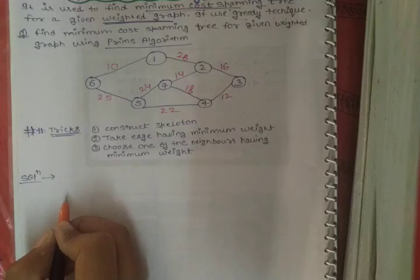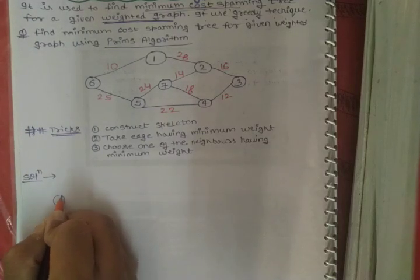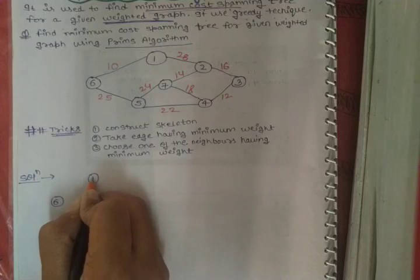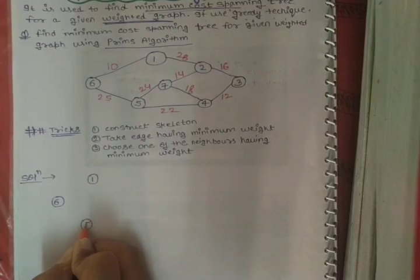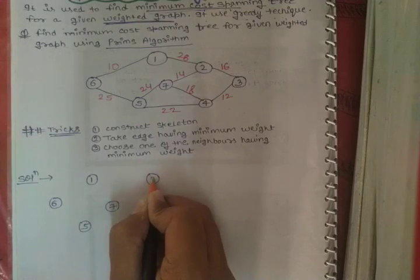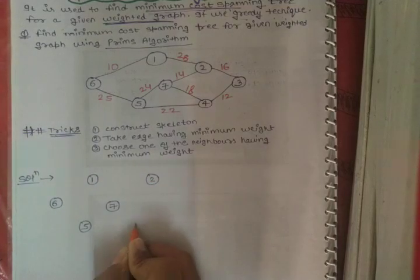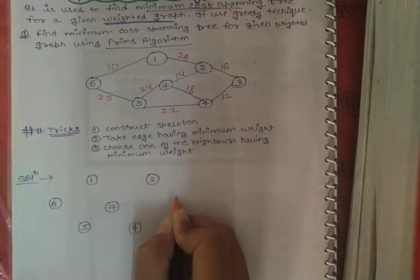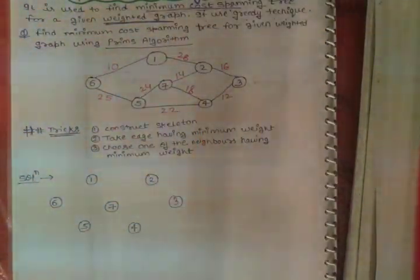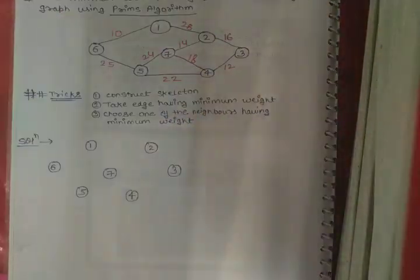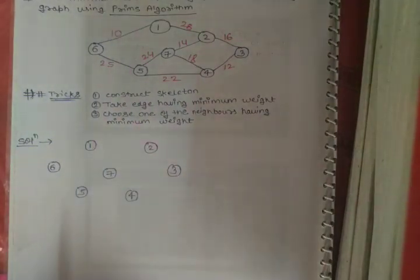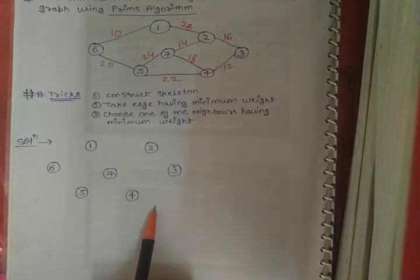So we construct the skeleton: here we write 6, here we write 1, here we write 5, 7, 2, 4, and then 3 - arranged nearly the same as in the given weighted graph. This completes the construction of the skeleton.